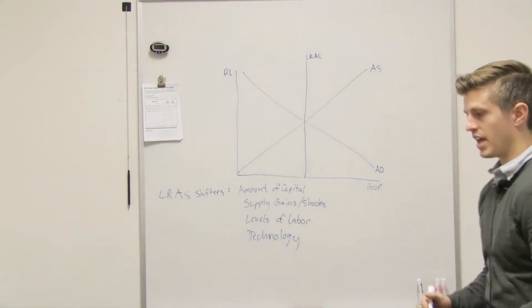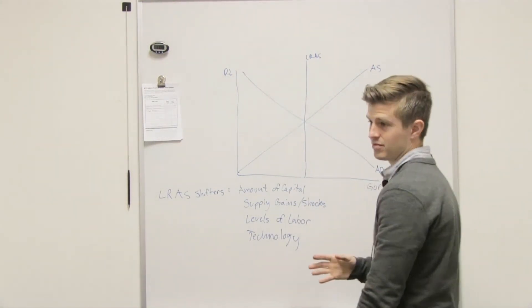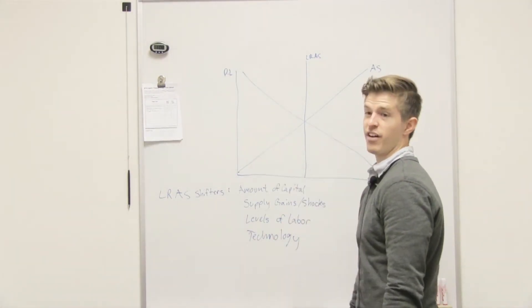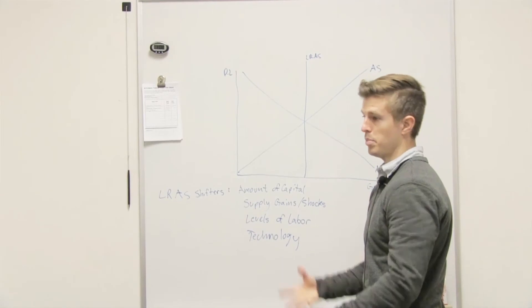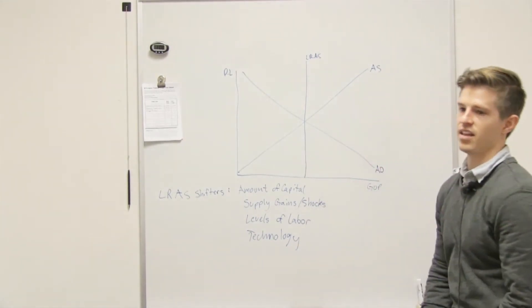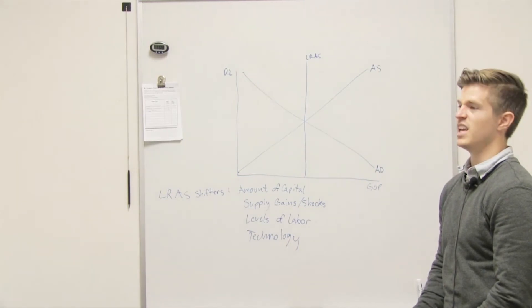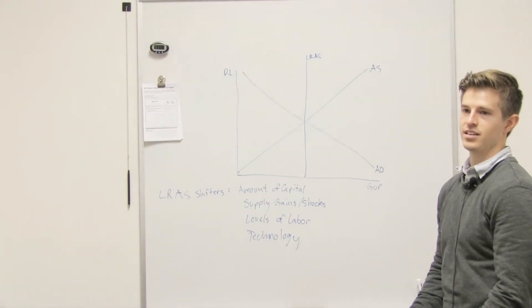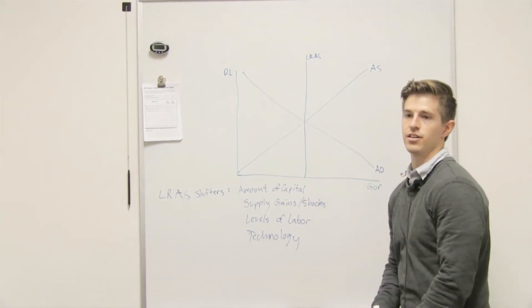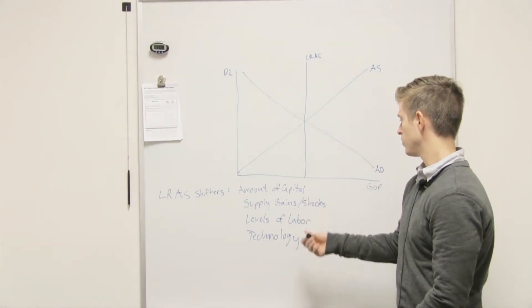It'll shift our long run right or left. So like if there's, like, let's say we used up all our oil, it would shift it to the left. Let's say we found a new oil reserve, like a big massive oil reserve, it would shift it to the right. Let's say that, the internet is a great example of a long run aggregate supply shifter. So the aggregate supply, and it is technology.